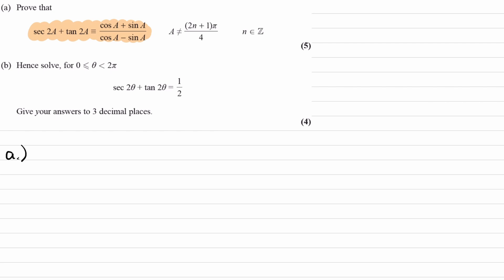So, with the left hand side, we can rewrite the sec 2a as 1 over cos 2a, the tan 2a as sin 2a over cos 2a, and then we can combine those two fractions together, which is often what you want to do for proof questions. If you see two fractions, combine them together. That usually works.